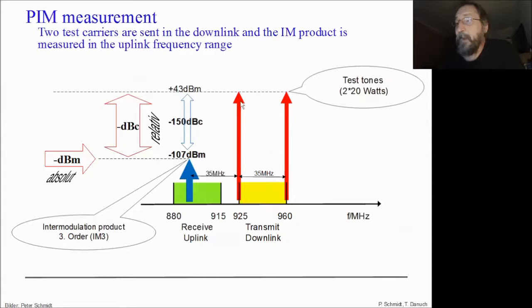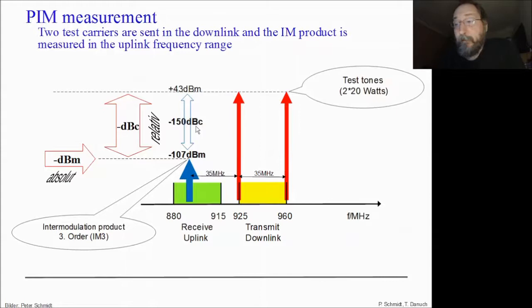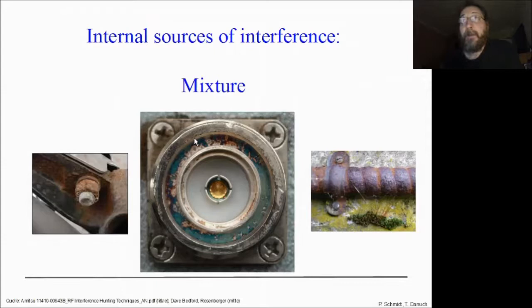These test tones are usually set to two times 20 watts — that is 43 dBm. If the intermodulation product is minus 107 dBm absolute, in comparison to 43 dBm we have a relative value of minus 150 dBc. I like dBc because it gives nice numbers, and it has another advantage: when speaking in dBc it's not necessary to state which transmit power was used for the measurement.